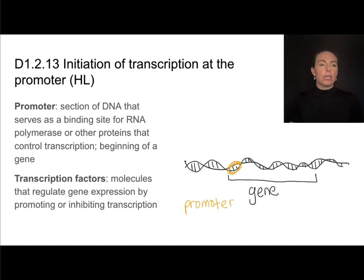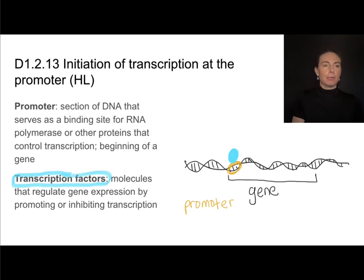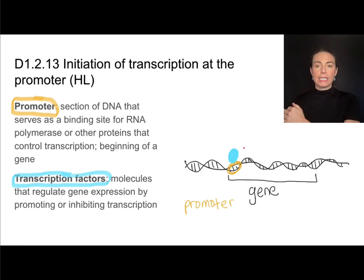The promoter serves as a binding site for either RNA polymerase or other factors that control transcription. It is at the beginning of the gene. So if transcription were going to take place, RNA polymerase would bind here and start using the antisense strand as a template. Transcription factors are proteins that can regulate genetic expression, and the way they do that is they bind to the promoter.